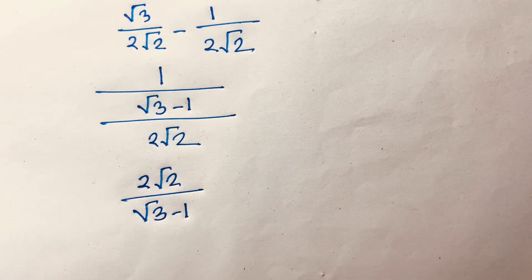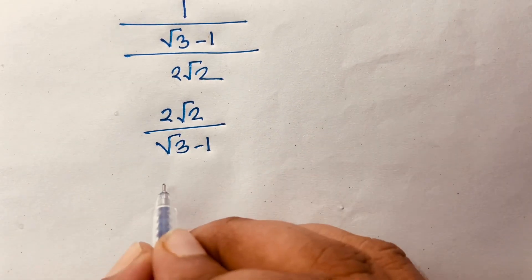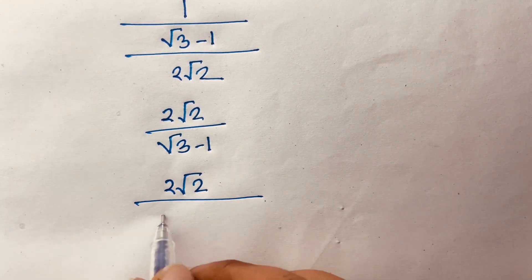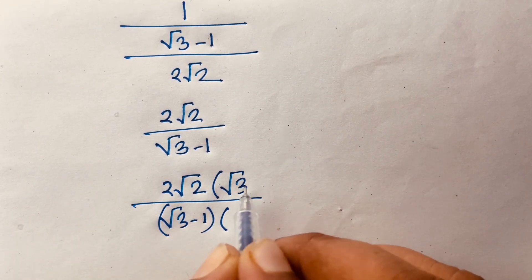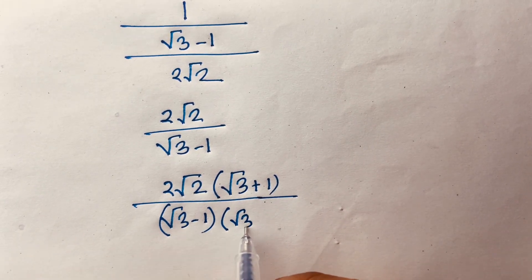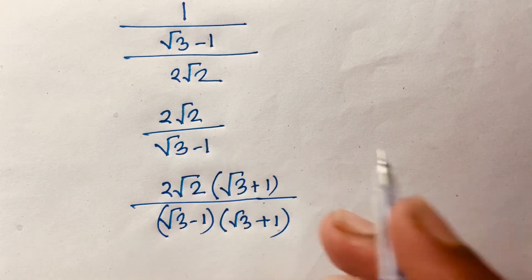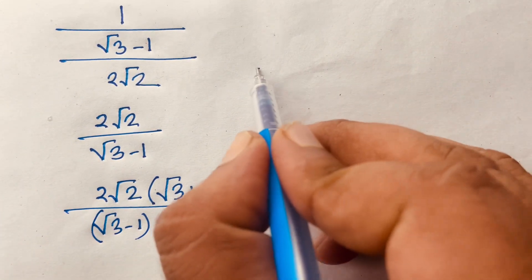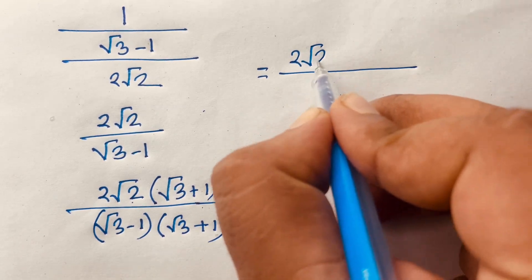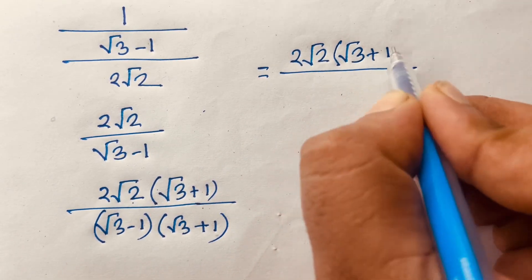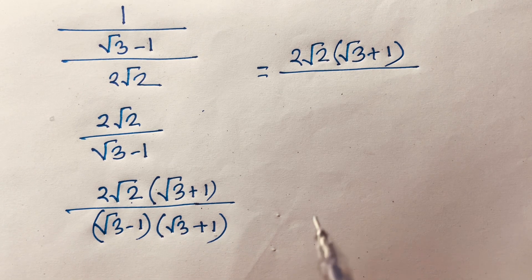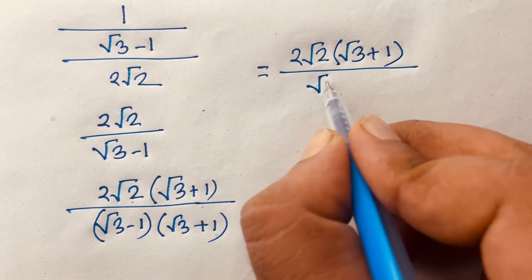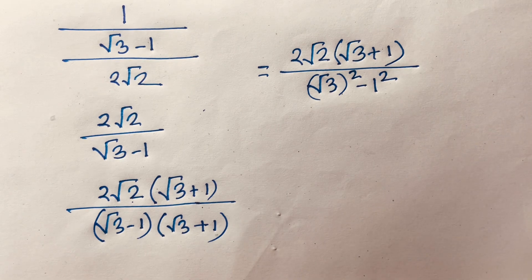To rationalize, multiply numerator and denominator by (√3 + 1). The numerator becomes 2√2 · (√3 + 1). The denominator uses the difference of squares rule: (a − b)(a + b) = a² − b², giving (√3)² − 1² = 3 − 1 = 2.